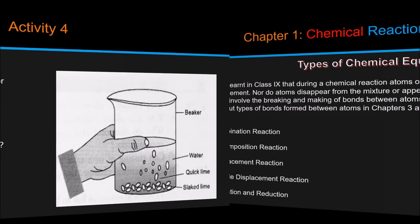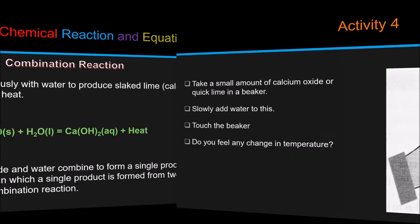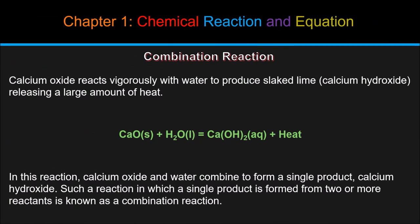Now we will be performing an activity, that is activity number 4. This activity comes under combination reaction. In activity, take a small amount of calcium oxide or quick lime in a beaker. Slowly add water to this. Touch the beaker as shown in figure. Do you feel any change in temperature? The video that you have seen is a part of combination reaction. In combination reaction, calcium oxide reacts vigorously with water to produce slaked lime, calcium hydroxide, releasing a large amount of heat.